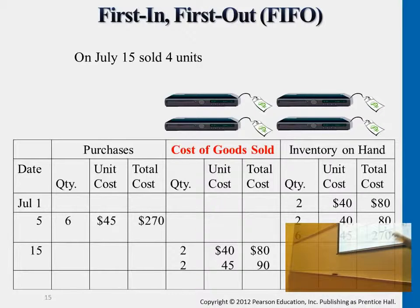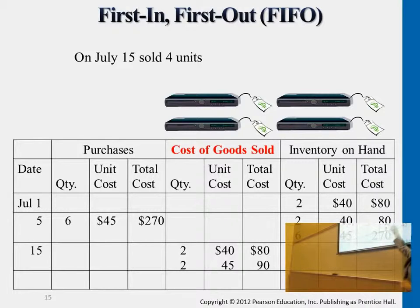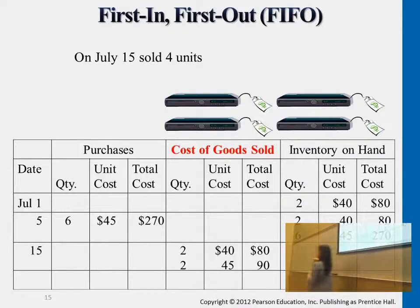So the cost of goods sold for those four units is: two assigned at $40 and two assigned at $45. If the problem only asked us to sell two DVD players, we would erase the $45 portion — only the two at $40 would apply, since those are the first inventory purchased and we sell them first, first-in, first-out, out to the customers' hands.